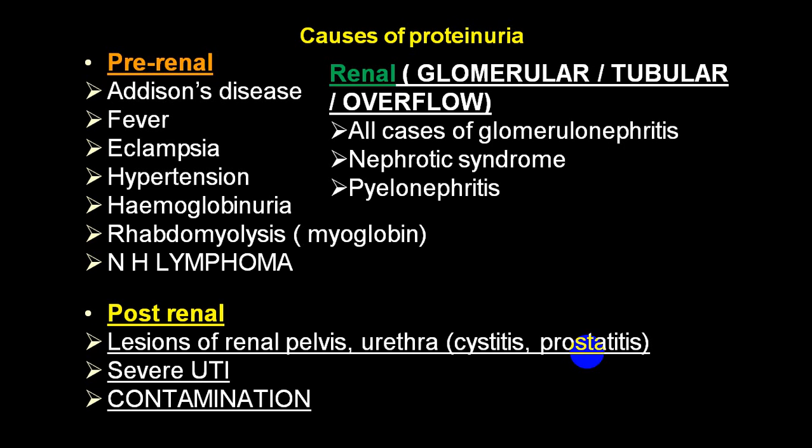Causes of proteinuria can be divided into pre-renal, renal, and post-renal. Pre-renal conditions include fever, eclampsia, hypertension, hemoglobinuria, rhabdomyolysis producing myoglobinuria, or lymphomas. In the renal variety: glomerular, tubular, or overflow types — the most common cause is glomerulonephritis, which can be nephritic or nephrotic variety. Damage to kidney plus pelvis is called pyelonephritis, caused by bacterial infections.